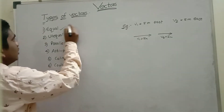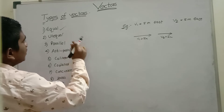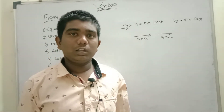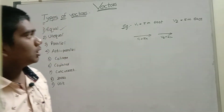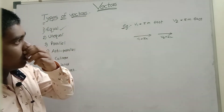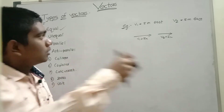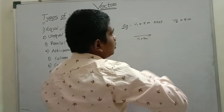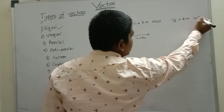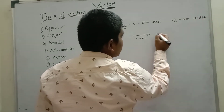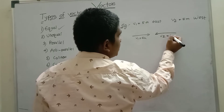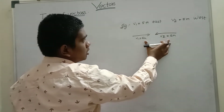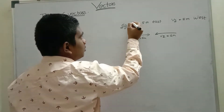Unequal vectors: if any one of the magnitude or direction is not the same, then they are said to be unequal vectors. For example, if we change V2 to West direction while keeping the magnitude the same, the direction is not the same, so these are unequal vectors.